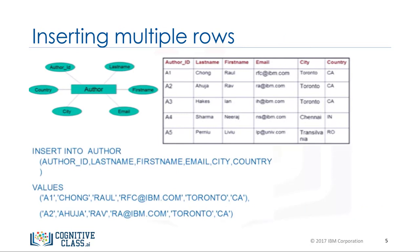Tables do not need to be populated one row at a time. Multiple rows can be inserted by specifying each row in the VALUES clause, where each row is separated by a comma. For example, in this INSERT statement we are inserting two rows: one for Raoul Chong and one for Rav Ahuja.